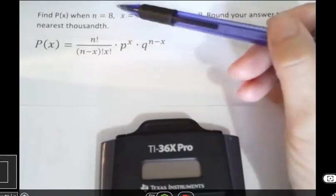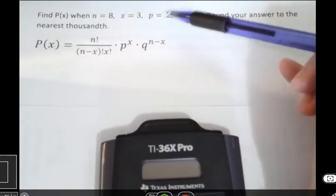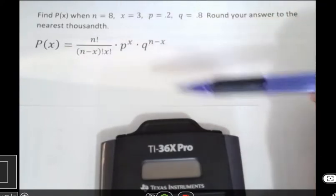So n is 8, that's the number of trials, x is 3, p is 0.2, q is 0.8, and that's everything in there.